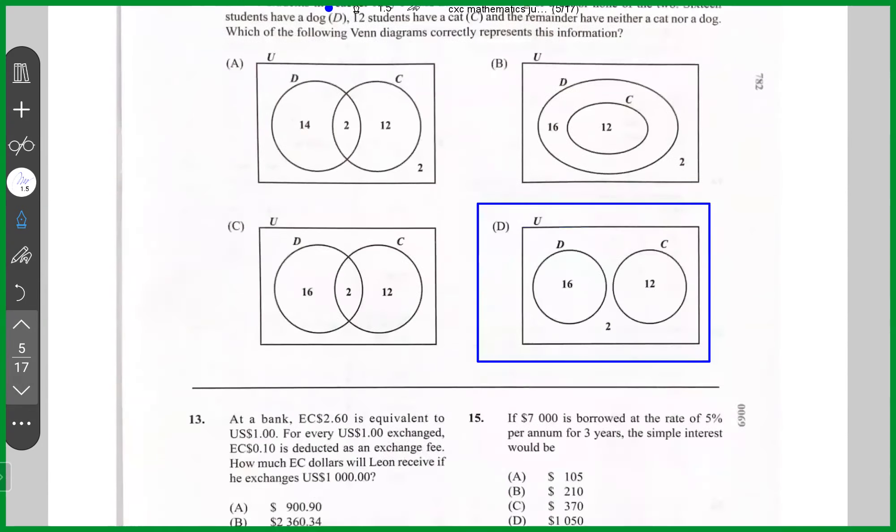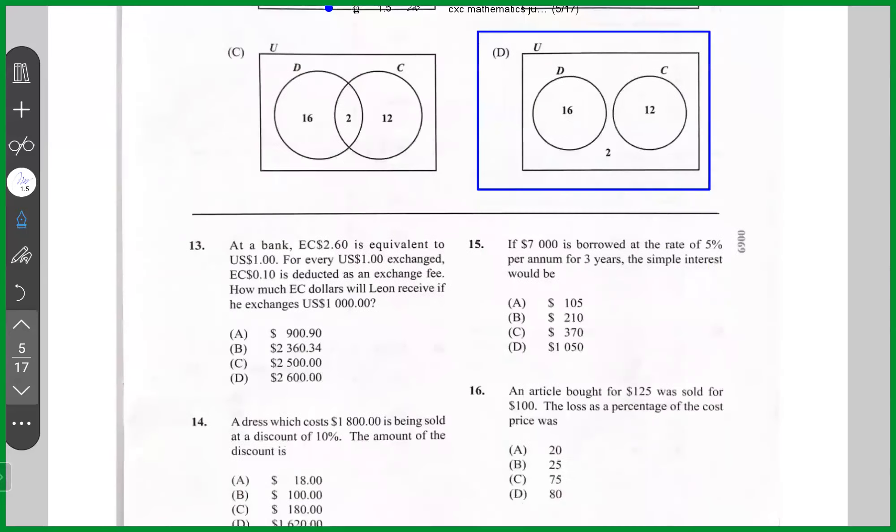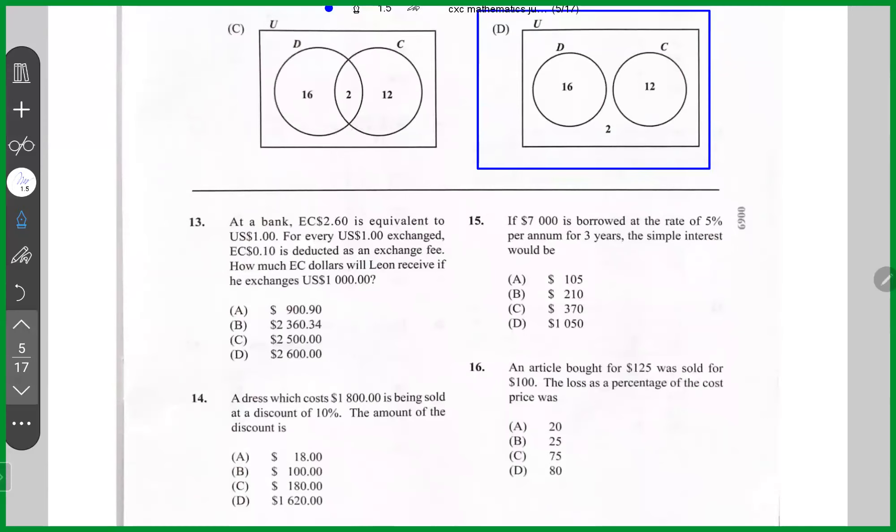13. It says at a bank, EC $2.60 is equivalent to US $1. For every US $1 exchange, EC $10 is deducted as an exchange fee. How much dollars will Leon receive if he exchange US $1,000? All right. So let's first do the conversion. First of all, let's calculate the fee. So for every dollar US, there is 10 cents EC. So the fee would be 10 cents multiplied by a thousand US dollar, which is EC. The fee is EC $100.